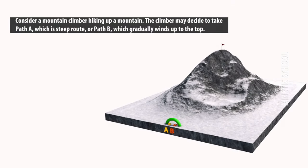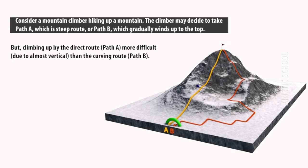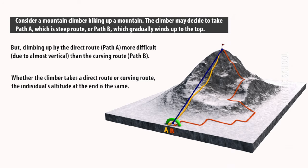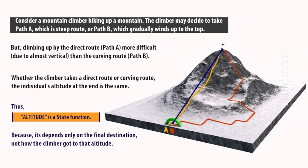Consider a mountain climber hiking up a mountain. The climber may decide to take path A which is a steep route, or path B which gradually winds up to the top. Climbing up by the direct route, path A, is more difficult as it is almost vertical than the curving route, path B. Whether the climber takes a direct route or curving route, the individual's altitude at the end is the same. Thus, altitude is a state function because it depends only on the final destination, not how the climber got to that altitude.